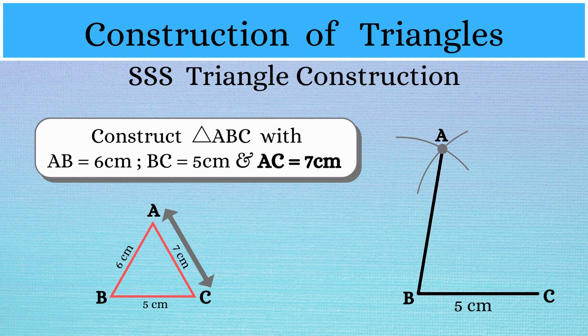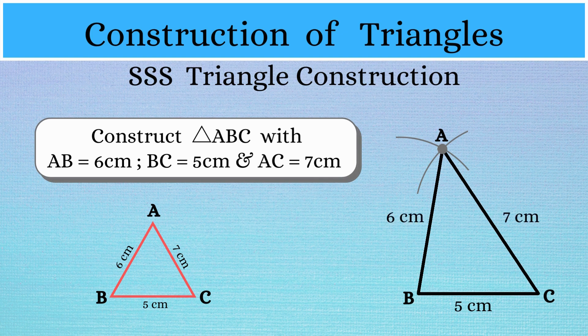Finally, we join AB and AC to obtain the triangle. AB is equal to 6 cm, BC is equal to 5 cm and AC is equal to 7 cm.